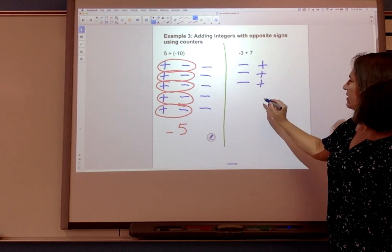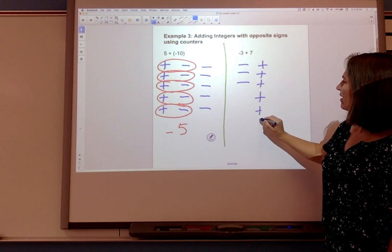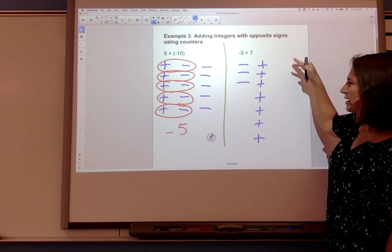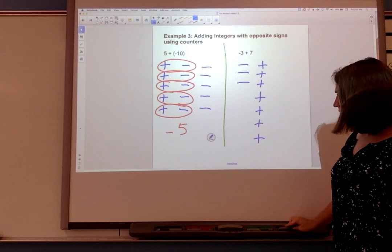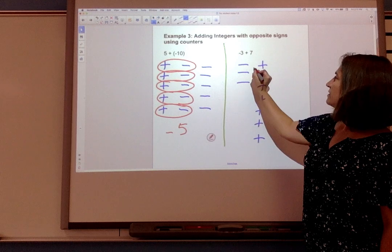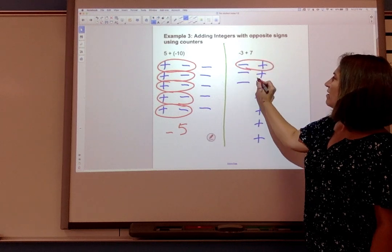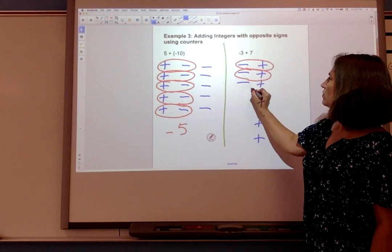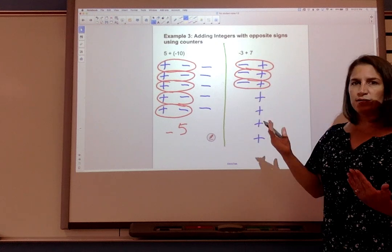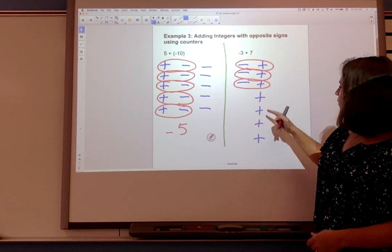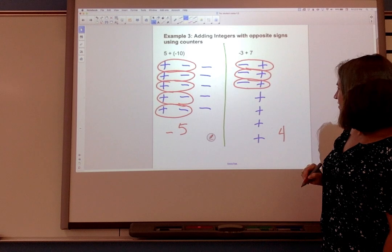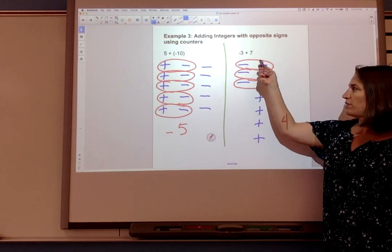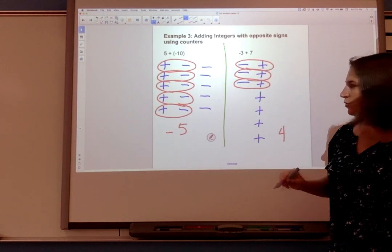I can keep going down this way. 4, 5, 6, 7 or I can put them to the side either way. But now I'm going to cancel out my zero pairs. I have 1, 2, 3 zero pairs that cancel out and what I'm left with is 4 positives. So the sum of -3 + 7 is positive 4.